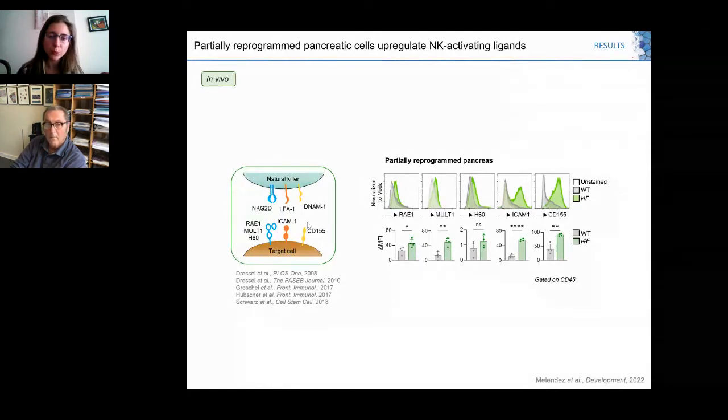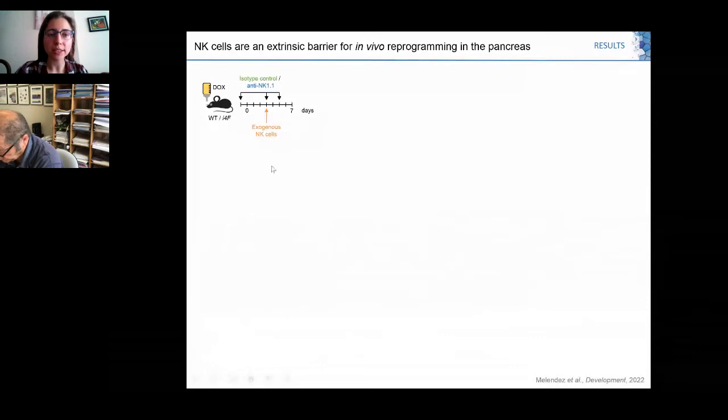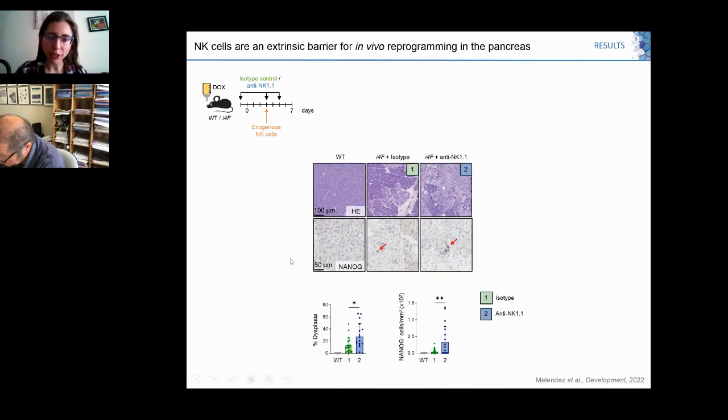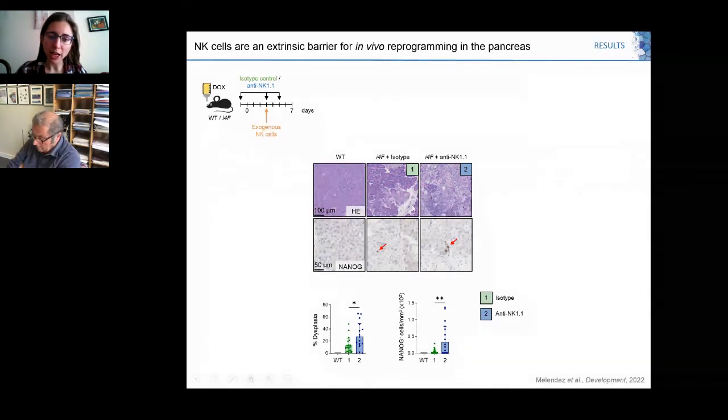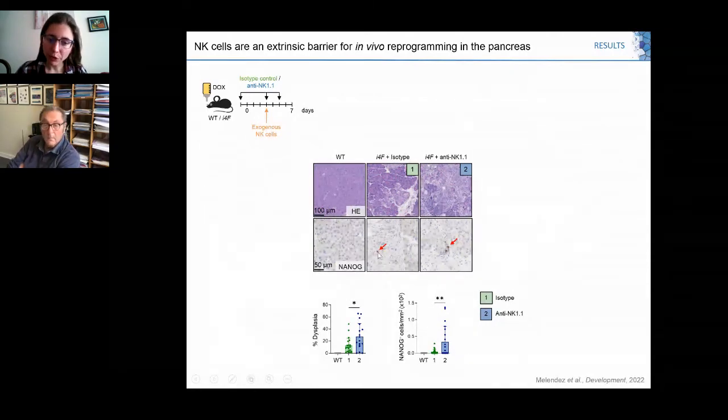We next wondered whether NK cells could be modulating the efficiency of partial reprogramming. We reprogrammed our mouse model for seven days with or without NK cells, using an isotype control antibody or anti-NK1.1. Here's a wild type mouse. Upon reprogramming you can see the appearance of foci of reprogrammed cells and several few Nanog-positive cells. Nanog-positive cells are pluripotent cells.